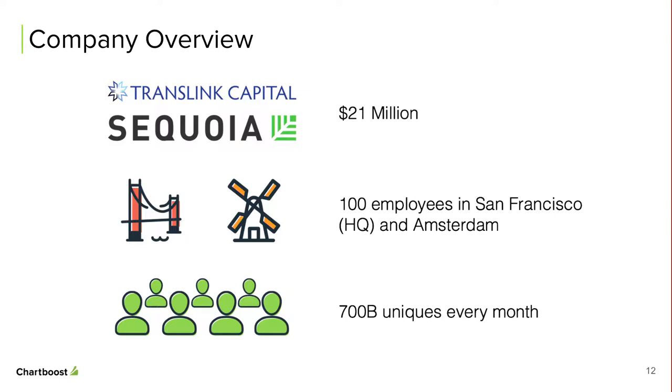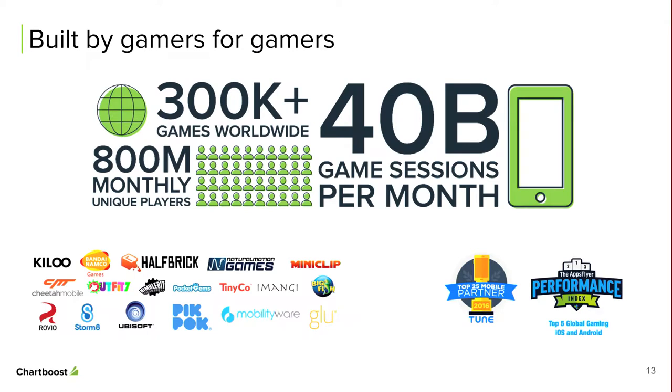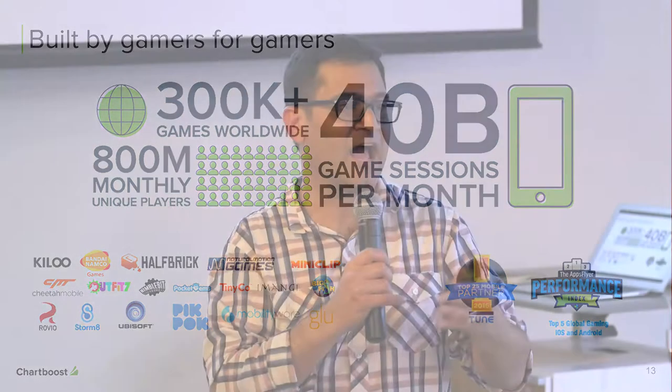Let me shift gears and tell you more about Chartboost. We're backed by Sequoia and TransLink, with about 100 people between San Francisco and Amsterdam. As a platform that helps game developers monetize, we see somewhere between 700 million to a billion unique monthly devices each month. We are the world's largest platform for monetization for gaming audiences, with our SDK in over 300,000 apps — 90% of the top-grossing iOS and Android gaming apps utilize our SDK.